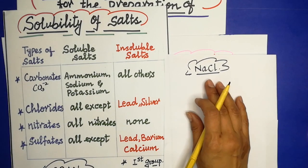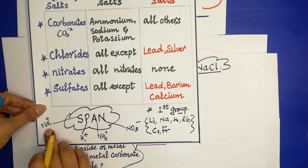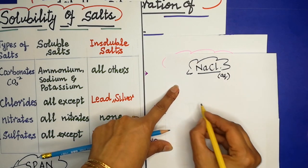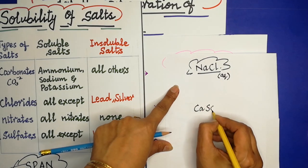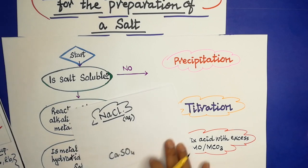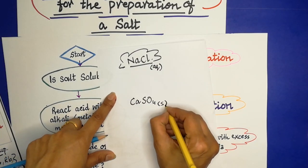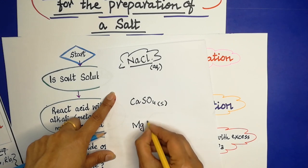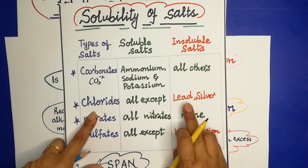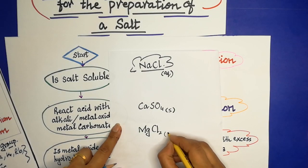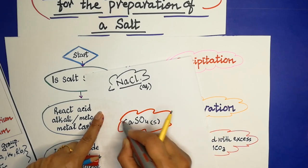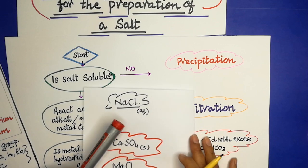For sodium chloride, all sodium salts are soluble, so yes, it is soluble. If we have to prepare calcium sulfate, we check the solubility rule — calcium sulfate is an insoluble salt. For magnesium chloride, we check: all chlorides are soluble except lead and silver, so magnesium chloride is soluble. First, we always check whether the salt is soluble or not.